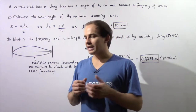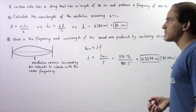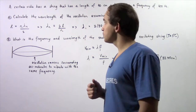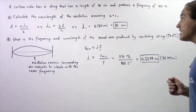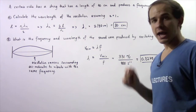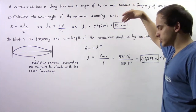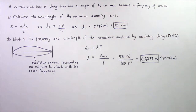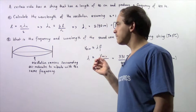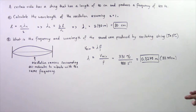Let's look at the following example dealing with standing waves on a stringed instrument. A certain violin has a string with a length of 40 centimeters and produces a frequency of 400 Hertz. We have two parts: in Part A, we calculate the wavelength of the oscillation assuming n equals 1, the fundamental frequency. In Part B, we find the frequency and wavelength of the sound wave produced by the oscillating string, assuming the temperature of air is 0 degrees Celsius.